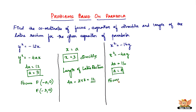Once you have found a, you can easily find the coordinates of the focus. The coordinates of the focus for a parabola of the form x² = -4ay is given by F(0, -a). So the coordinates of the focus will be F(0, -4).